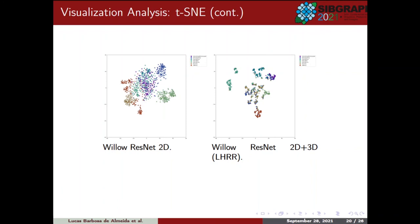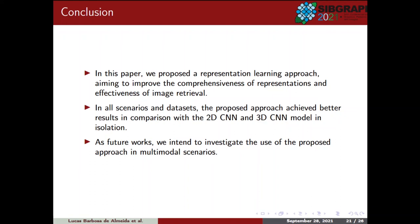In this paper, we propose a representation-learning approach aiming to improve the comprehensiveness of representations and effectiveness of image retrieval. It uses rankings generated by a pre-trained 2D model and builds a sequence analyzed by a pre-trained 3D model. Both representations have their rankings fused by manifold learning algorithms. In the experimental evaluation, our approach achieved significant effective gains on retrieval tasks conducted on action recognition datasets. In all scenarios and datasets, the proposed approach achieves better results in comparison with the 2D CNN and 3D model in isolation. Our results are promising for representation learning, and as future work, we intend to investigate the use of the proposed approach in multimodal scenarios, aimed to fuse information from multiple modalities in unsupervised multimedia retrieval scenarios.